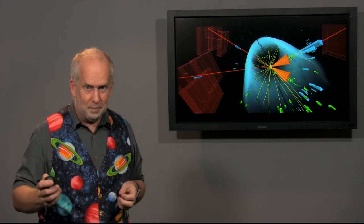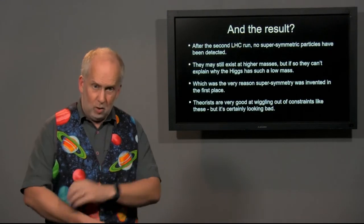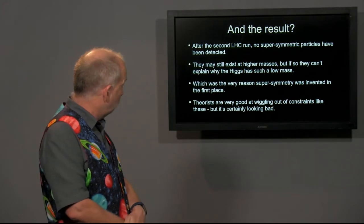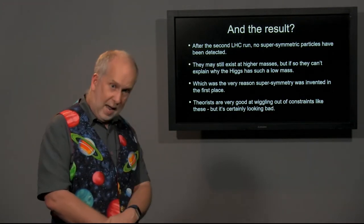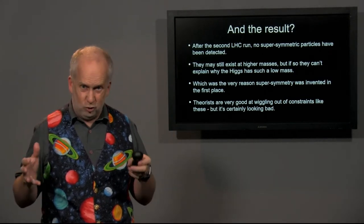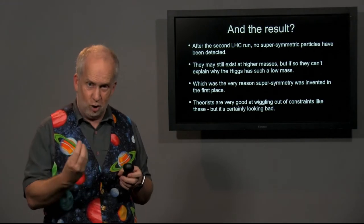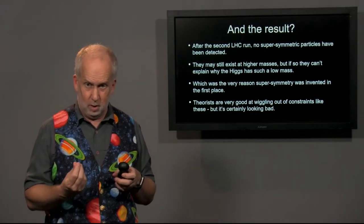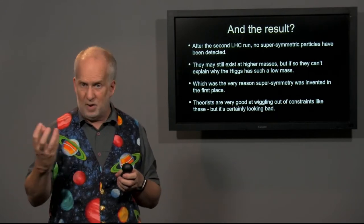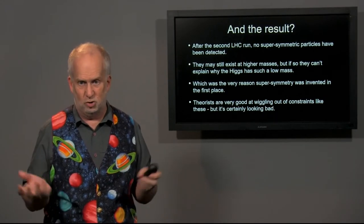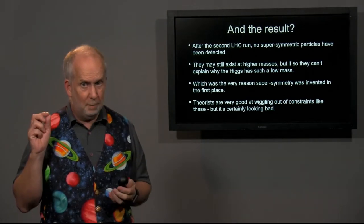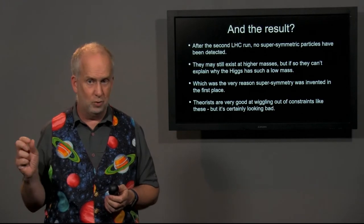And the result is, well, no supersymmetric particles. Sorry, none. They did not show up. And they were able to test the entire mass range that would allow these supersymmetric particles to explain the low mass of the Higgs boson. Because basically supersymmetric particles would need to have about the same mass as the Higgs boson, which is 125 giga electron volts. And they searched that range very thoroughly, they found the Higgs boson, but they did not find any other particles with the right properties.